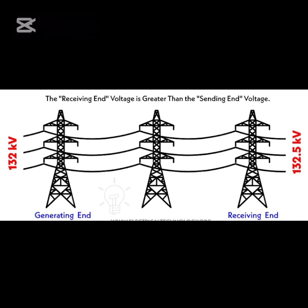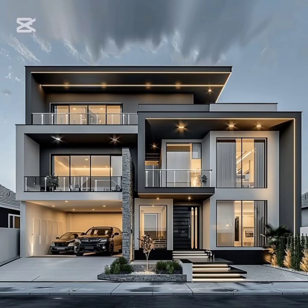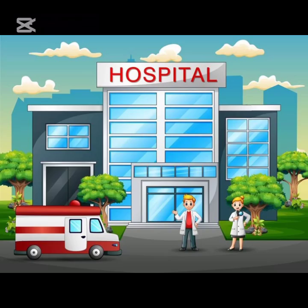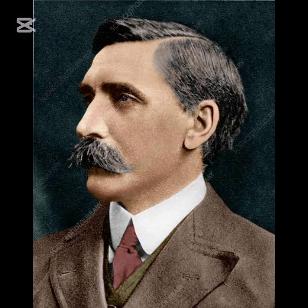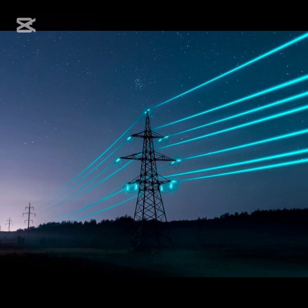In simple terms: sending end voltage means the voltage at the power generating plant or source of power, while receiving end voltage means the voltage at the point of consumption such as homes, shops, schools, hospitals, and industries. The Ferranti effect was discovered by British electrical engineer Sebastian Ziani de Ferranti in 1890. It mainly occurs in the presence of a huge charging current due to the capacitance of the transmission line. The Ferranti effect occurs due to three main reasons, the first being transmission line capacitance — a long transmission line has significant capacitance and inductance along its length.